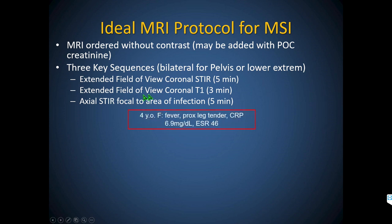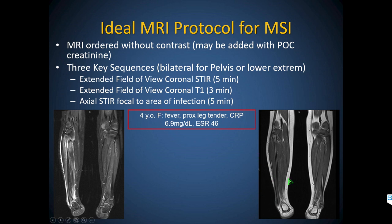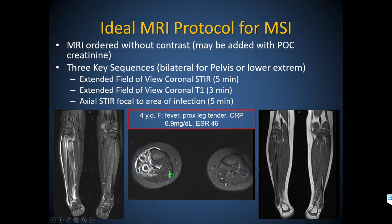The ideal MRI protocol we follow now: we order without contrast and get only three key sequences, always bilateral for the pelvis or lower extremities. We start with an extended field-of-view coronal STIR — takes about five minutes. Here's a four-year-old female with proximal leg tenderness. I thought on exam it was the proximal tibia with elevated inflammatory markers and fever, but the extended field-of-view coronal STIR showed it was actually the proximal fibula that was affected.